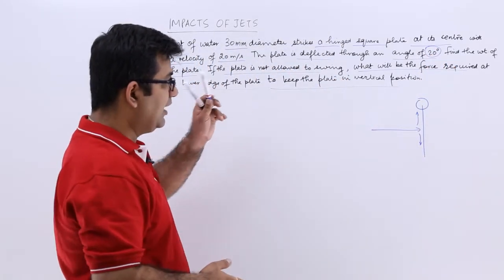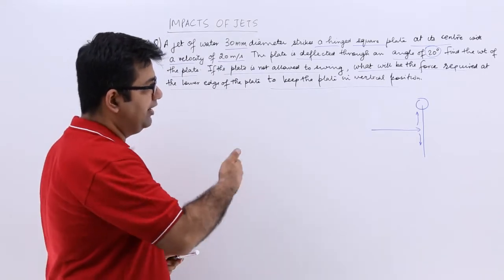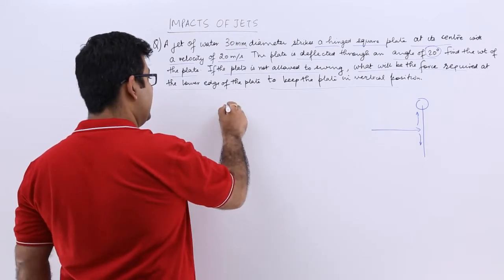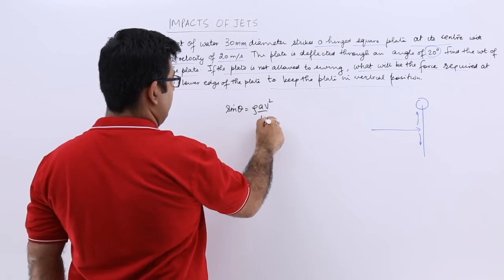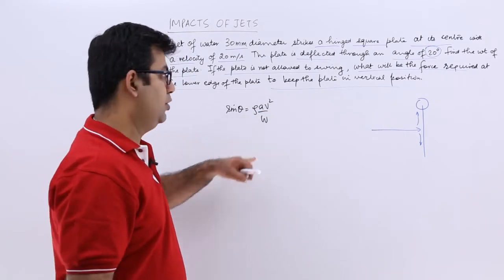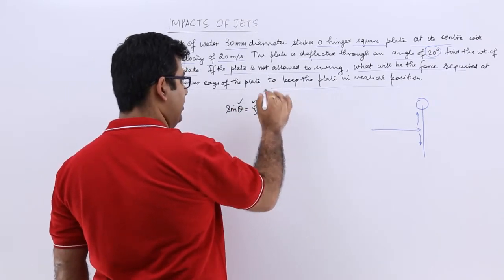So for that part you need to find the weight of the plate. If it is being deflected, the formula that we can use is sin theta equals rho av squared upon w. From here I need to find out w, because I know theta, I know density, I know velocity, I can find out area.